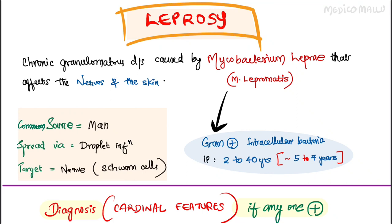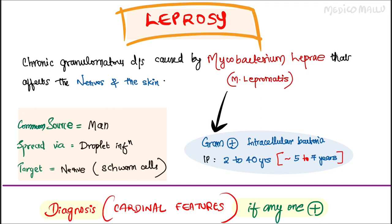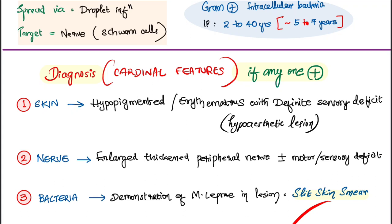Welcome back. Today we are going to discuss leprosy, also known as Hansen's disease. It is a chronic granulomatous disease caused by Mycobacterium leprae that affects the nerves and the skin. The bacteria is a gram-positive intracellular bacteria with an incubation period of 2 to 40 years, with an average of 5 to 7 years. The common source of infection is man-to-man spread via droplet, and the target are the nerves — more specifically, the Schwann cells of the nerves.